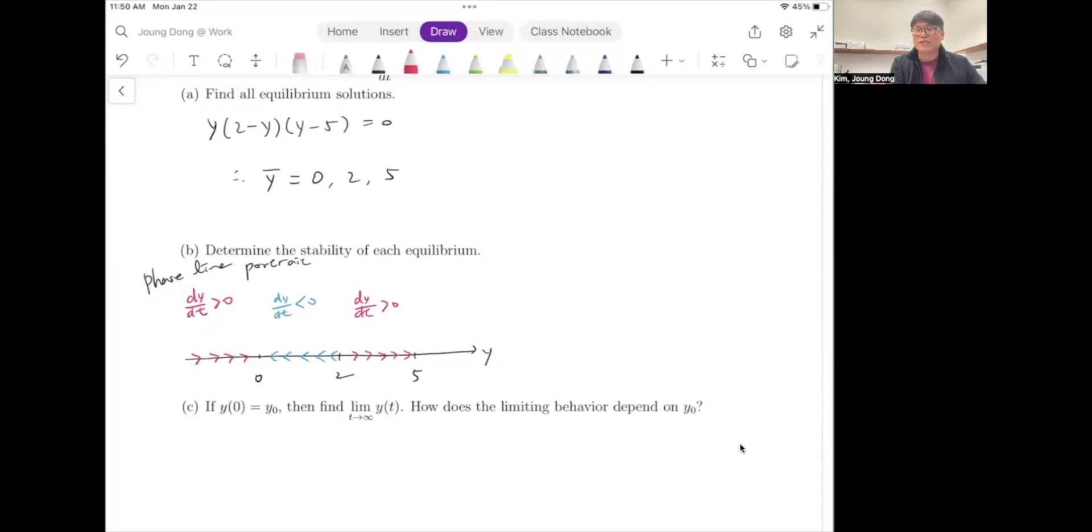And then the third one. Whenever we have any number which is bigger than 5, maybe we can do like 100. And y is 100, positive. 2 minus 100 is negative. And 100 minus 5 is positive. I have only one single negative, which means dy/dt must be negative. So it is down direction. So as you can see in this phase line portrait, we can conclude like this way. y = 0 and y = 5 are stable solutions. 2 is unstable solution.